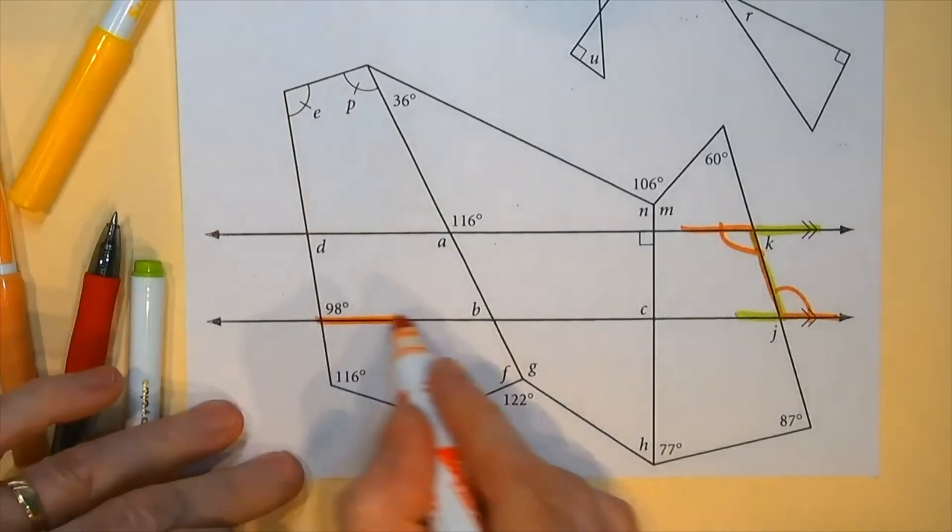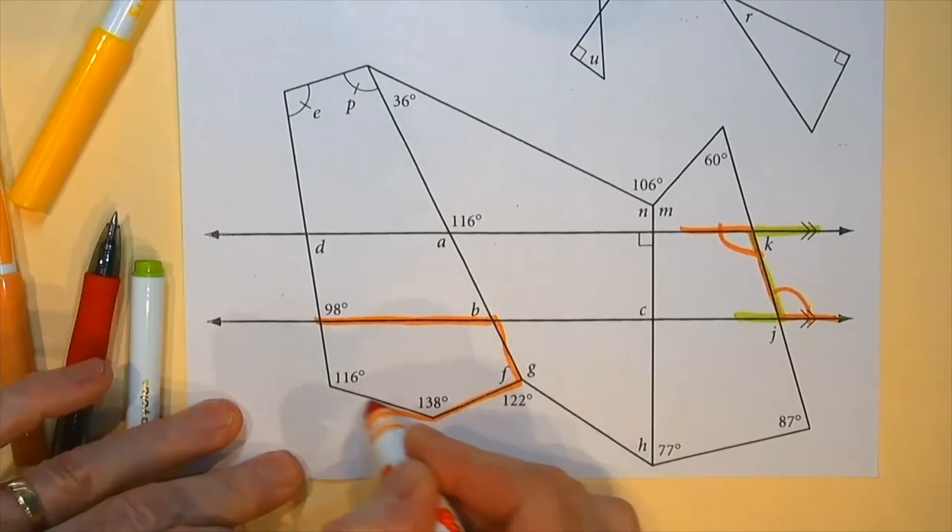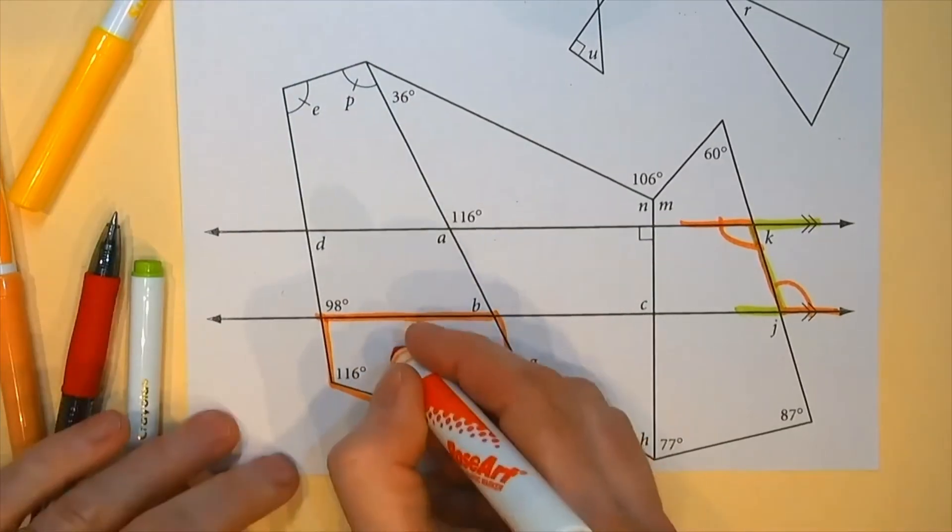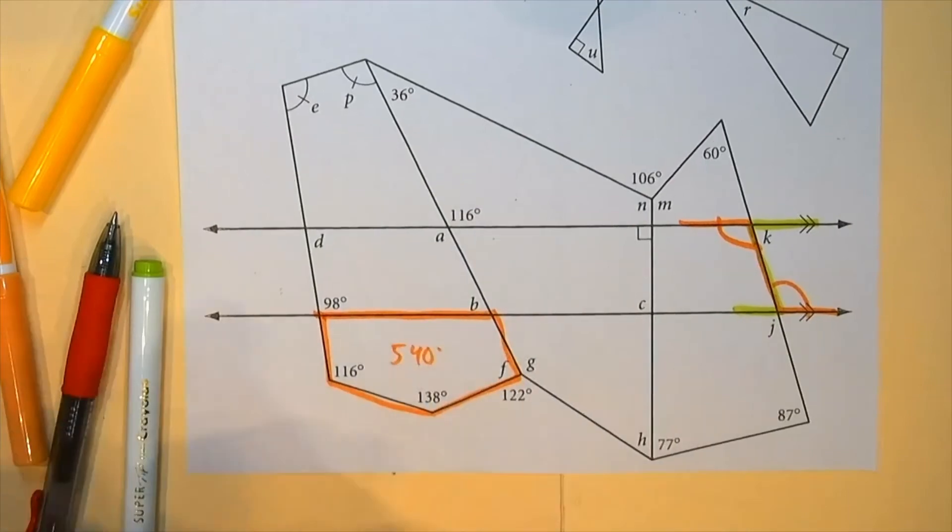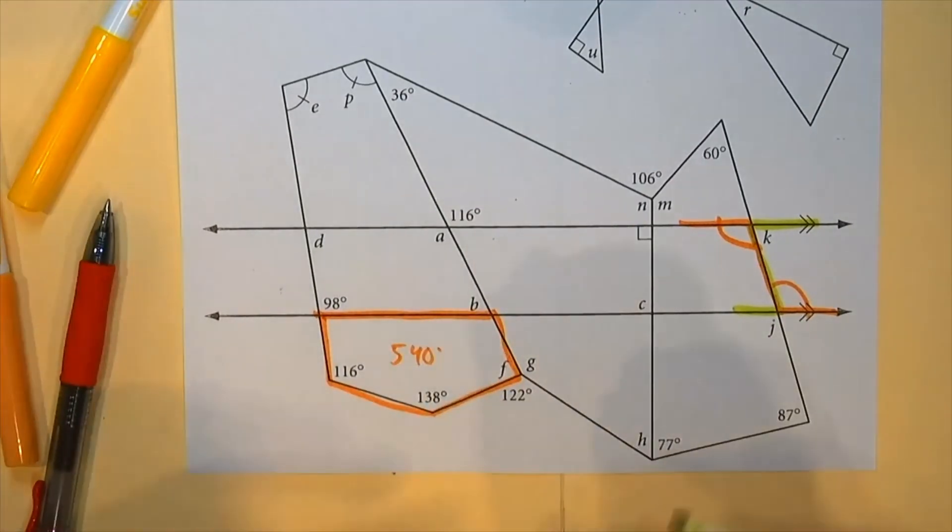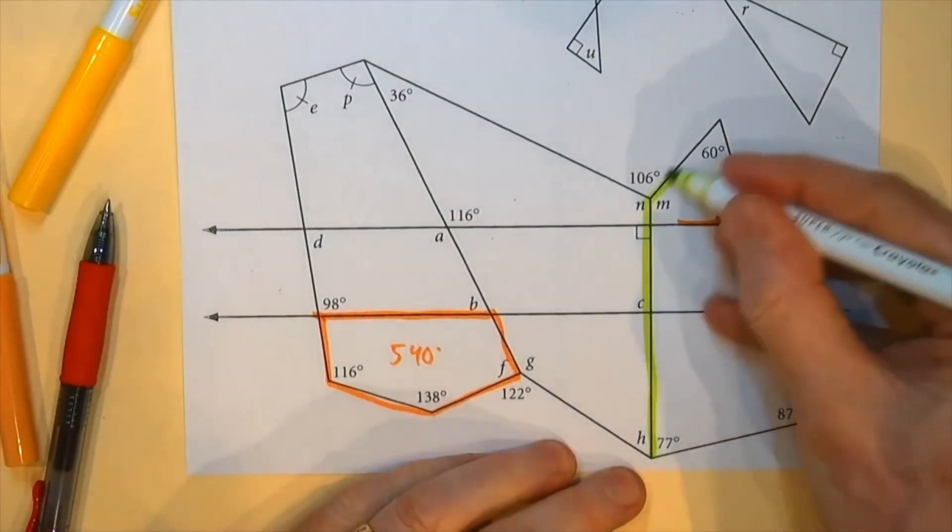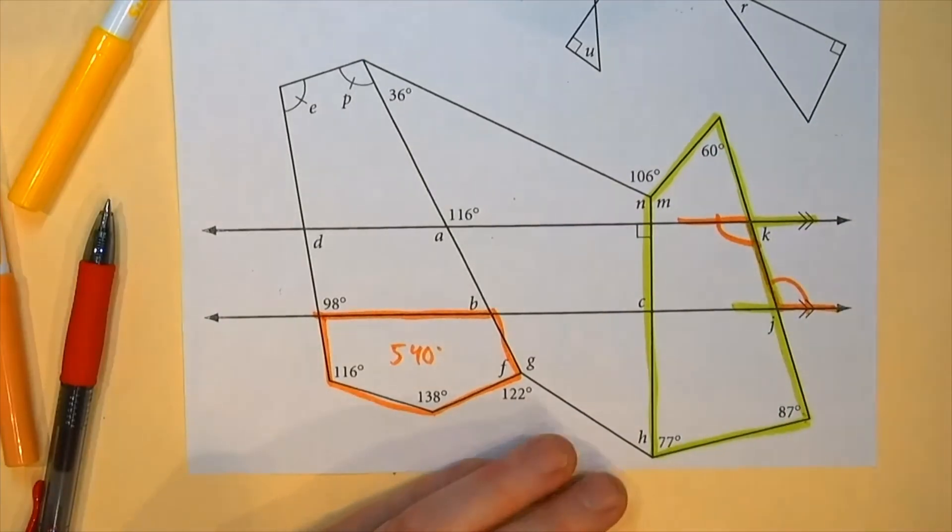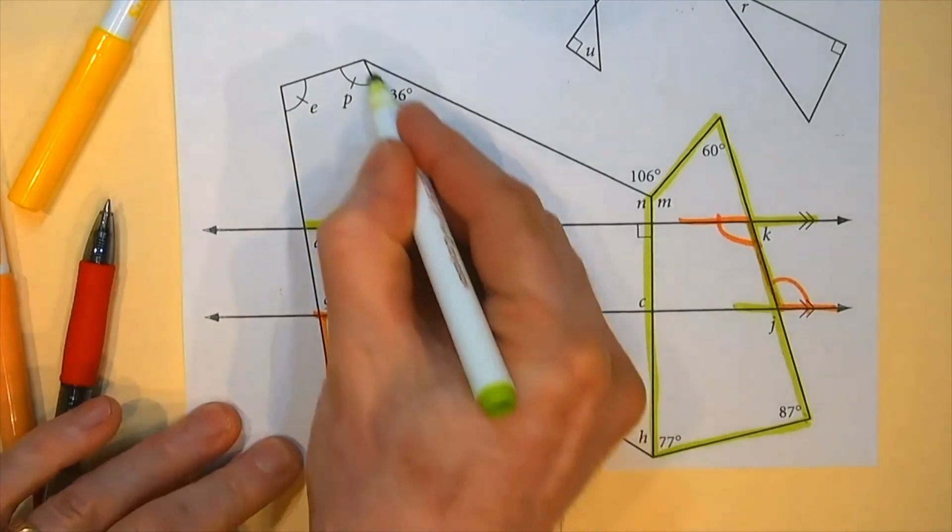But what else do I see? Hey, here's some interesting things. Here's a pentagon. This adds up to, what was it? 540 for a pentagon. So there's a bunch of shapes in here. You can even make gigantic shapes like this and go, hey, there's a quadrilateral or here's another quadrilateral.